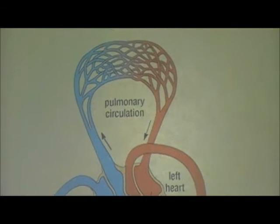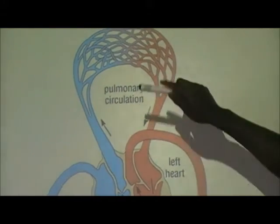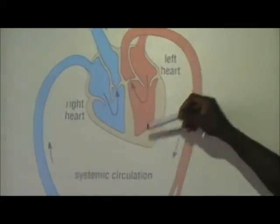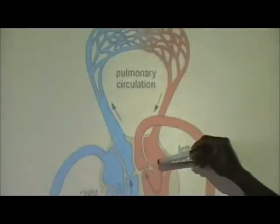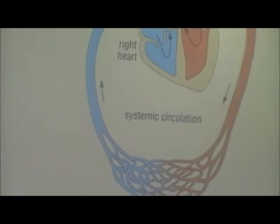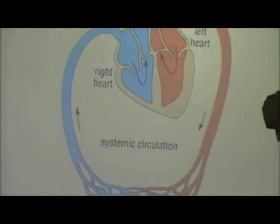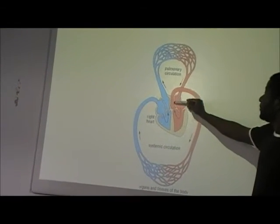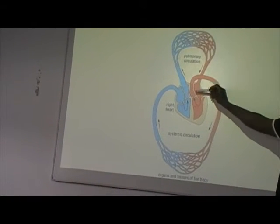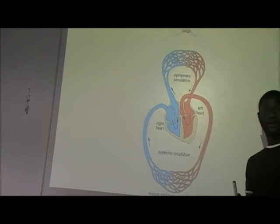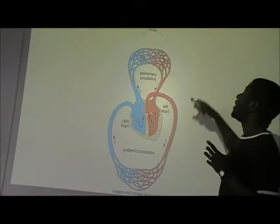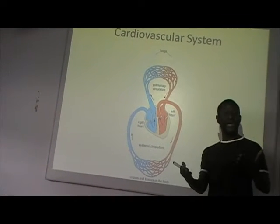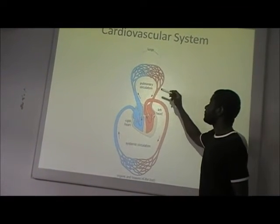The oxygenated blood now has to return back into the heart, going to the left side — starting from the top, which is the left atrium. As we said earlier, a vein returns blood back to the heart. This vein, which returns the blood back to the heart from the lungs, is called the pulmonary vein — because 'pulmonary' relates to the lungs and the vessel taking blood back to the heart is a vein. Hence the name, pulmonary vein.